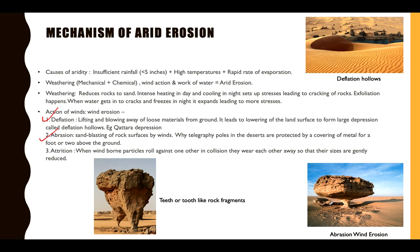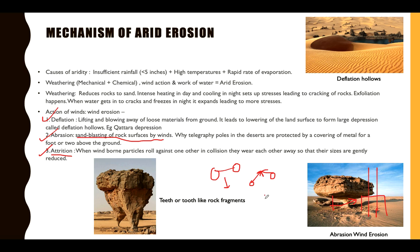Abrasion is when wind carries sand particles that blow against rocks, eroding them. This is why telegraph poles are protected by covering them with metal above the ground — to reduce lower erosion from abrasion. Then there is attrition: when two sand particles roll against one another, they wear each other away, so their sizes are gradually reduced. This is how fine sand is produced through attrition.